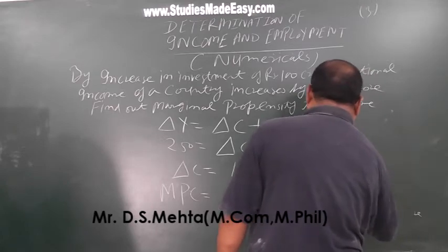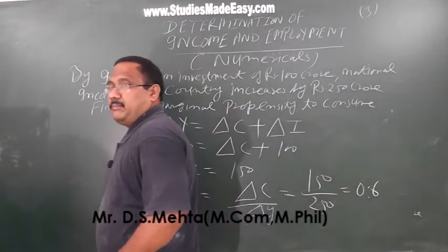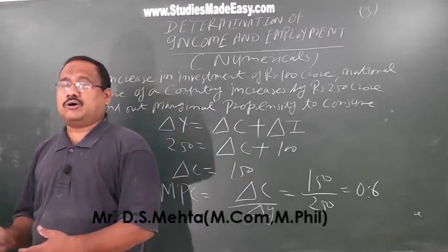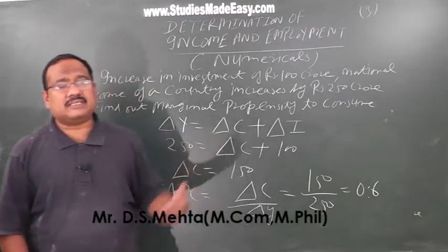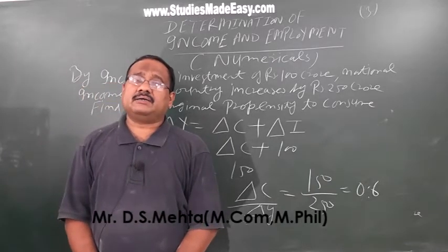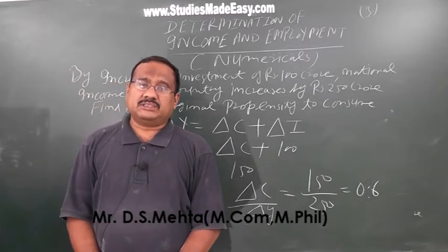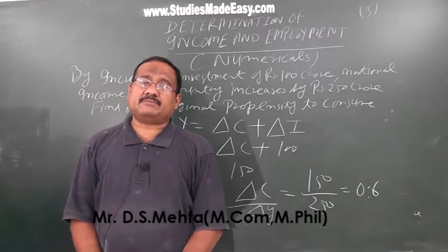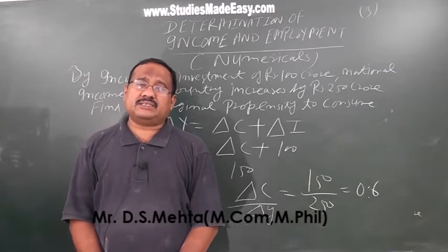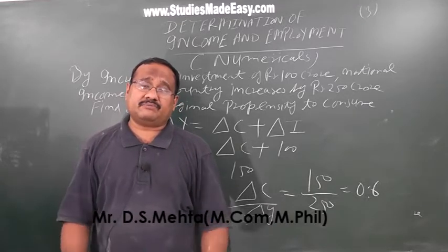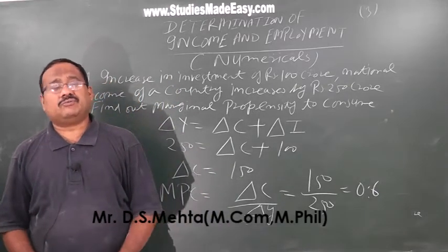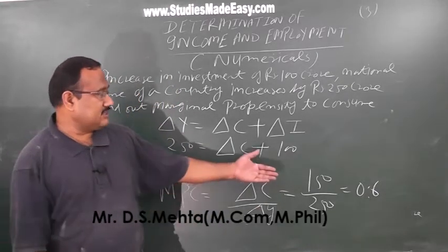0.6 यह आपका आजाएगा Marginal Propensity to Consume। सीधे question से भी answer मिल रहा है — 250 करोड़ रुपए national income बढ़ा, change in investment 100 करोड़ हुआ, तो change in consumption 150 करोड़। MPC = 150 upon 250 is equal to 0.6।